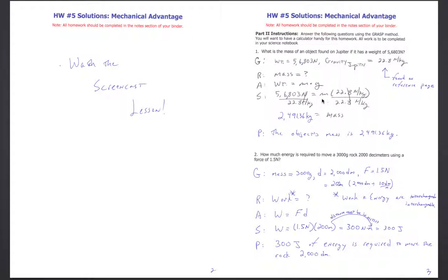From our algebra skills, we divide both sides by 22.8 Newtons per kilogram. The Newtons cancel out nicely, leaving us with kilograms — the units we want, since mass is always in kilograms or grams. The object's mass is 2,491.36 kilograms, or you could round to 2,491 kilograms.